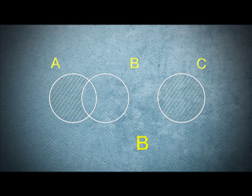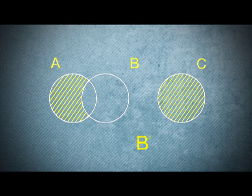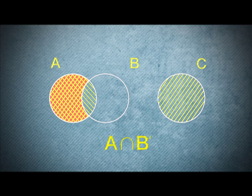So, for the first diagram, B complement represents any region outside of B. So, A intersect B complement is the overlapping region of A and B complement. Ta-da! The answer.